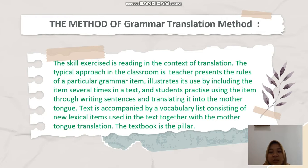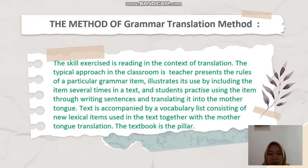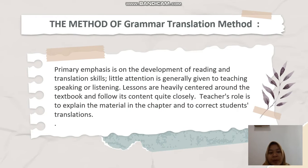There is very little attention to pronunciation or any communicative aspect of the language. The skill exercised is reading in the context of translation. The typical approach in the classroom is to present the rules of a particular grammar item. Illustration is used by including the item several times in a text, and students practice using the item by writing sentences and translating them into the mother tongue. Text is accompanied by a vocabulary list consisting of new lexical items used in the text together with the mother tongue translation. The textbook is the primary pillar.